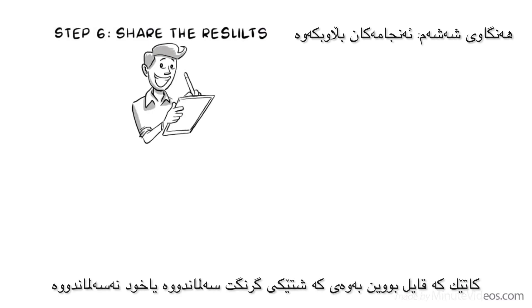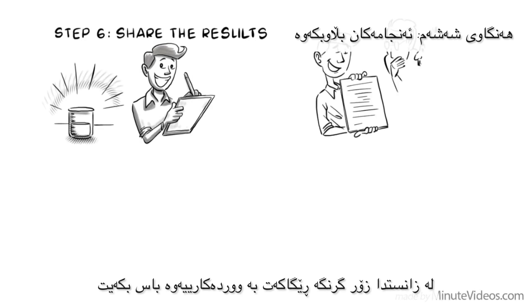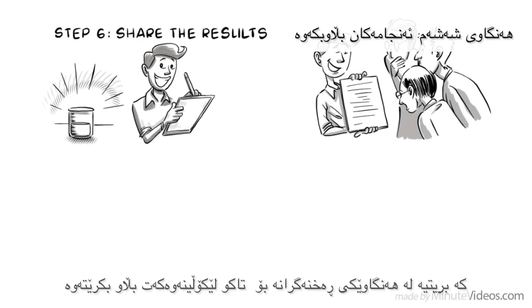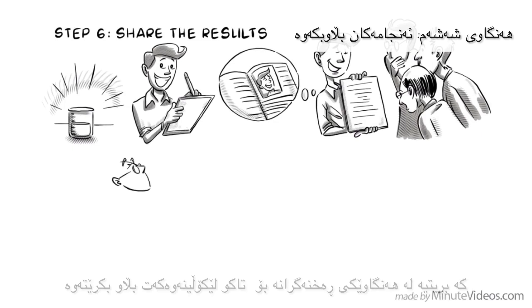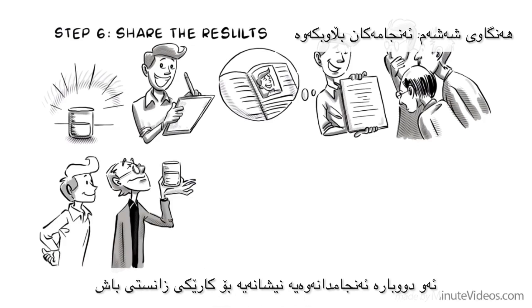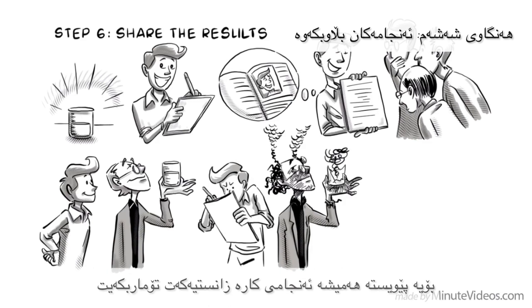Step 6: Share the results. When you are satisfied that you have proven or disproven something important, report your results. In science, it is important to detail your methods so that your peers can review your work, which is a critical step to getting published. If your results are solid, your experiment can be repeated by other scientists. Such reproducibility is a sign of good scientific work. But failed results can also be interesting — an incorrect prediction could prove to be important and should always be reported.